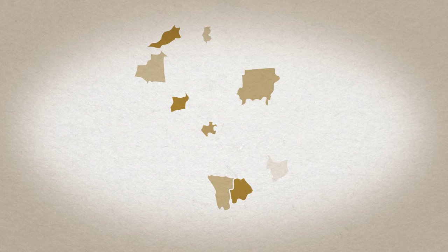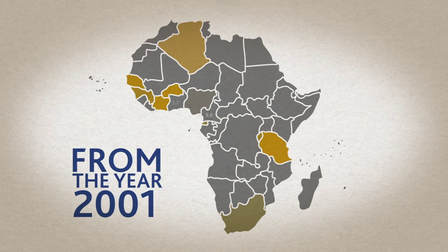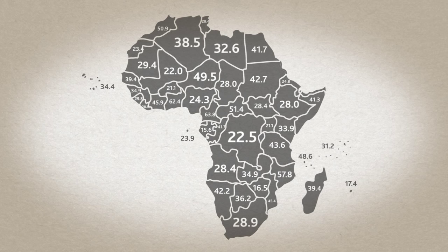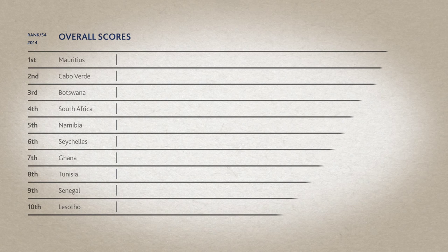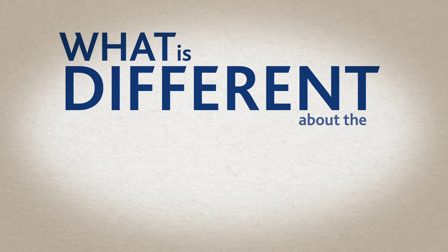The IIAG provides data for every African country from the year 2000 to the most recent year. Each country receives a score on a scale of 0 to 100, with the best performing countries scoring higher, and countries are also ranked from 1 to 54 in each year.